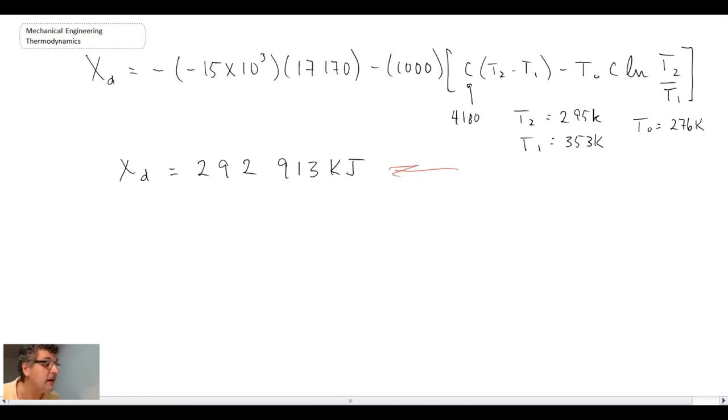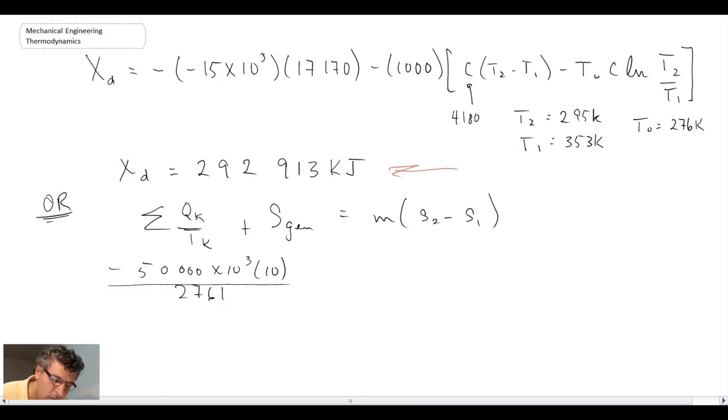We'll quickly take a look at the second approach using the entropy generation. So, we can write the entropy generation equation. In this equation, the air does not change in entropy because it is maintained with the temperature. The first term enables us to evaluate the heat transfer terms. That's the heat loss. And with that, we get the entropy generation is the following.